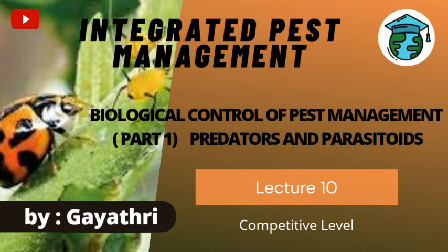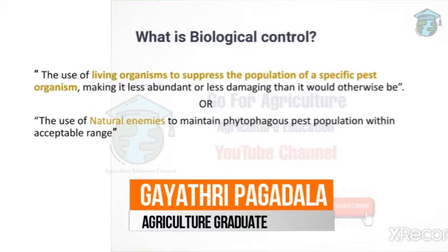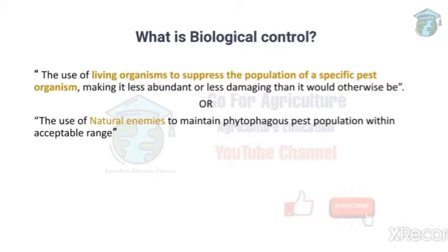Hello everyone, welcome back to our channel Go For Agriculture. In today's lecture 10 of IPM, we'll see biological control methods of pest management. Biological control means using living organisms — insects — to control pests. The main motto is to use one insect to control another. There are harmful insects and useful insects; we use useful insects to control harmful insects. These useful insects are also called natural enemies.